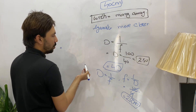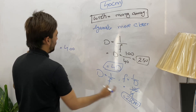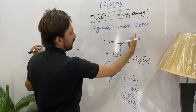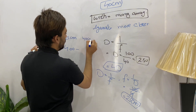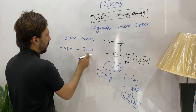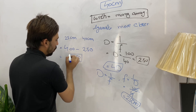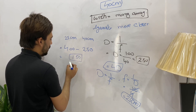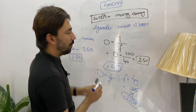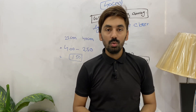At 25 centimeters the dioptric value was 4 diopters, and at 40 centimeters the value was 2.5. Deducting 2.5 from 4 gives 1.5 diopters. So there is a lead of accommodation of 1.5 diopters. This is how we find the lead of accommodation and lag of accommodation using nott retinoscopy.